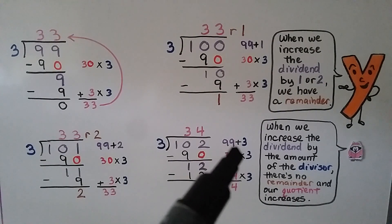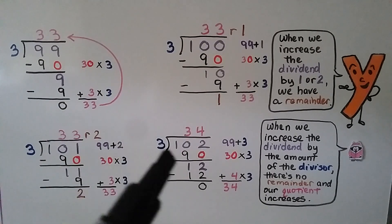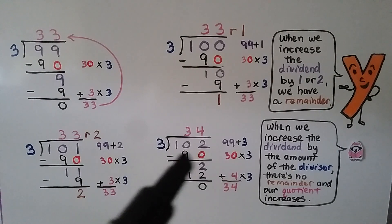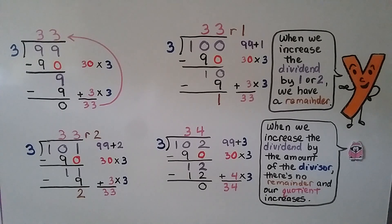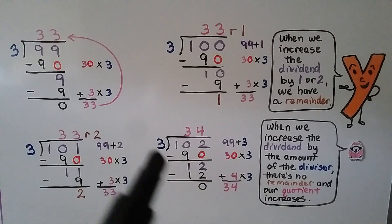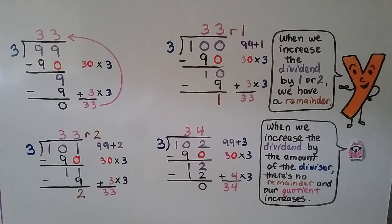Now what happens when we add 3 to get 102? We take away 90, and now we have 12 left over. Well, 4 times 3 is 12, so we subtract that and get 0. Now our quotient is 34. When we increase the dividend by 1 or 2, we get a remainder because those are less than the divisor 3. When we increase the dividend by the amount of the divisor — we increased it by 3 and the divisor was 3 — there's no remainder and our quotient increases.